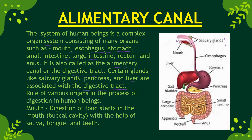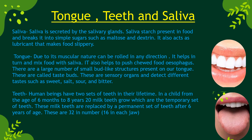Digestion starts in the mouth, which we call the buccal cavity. Here, saliva, tongue, and teeth all play a role. Saliva helps mix the food. Saliva is secreted by the salivary glands, and it contains enzymes that break down starch present in the food into simpler sugars like maltose and dextrin. Saliva also acts as a lubricant, making food slippery so it can move through the mouth easily.